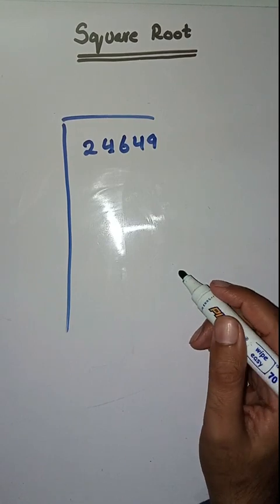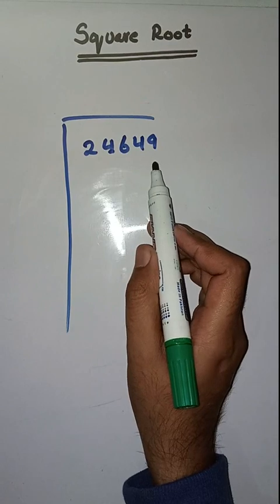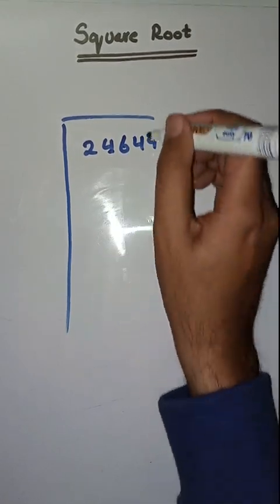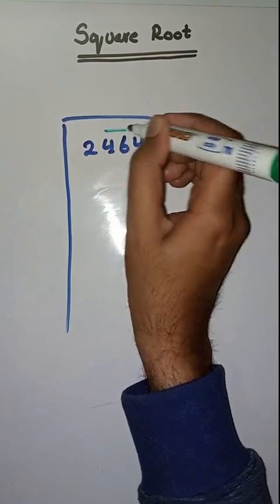We have to find square root of 24,649. So first step is we have to make pairs from right to left like this: 49, 46, and 2.